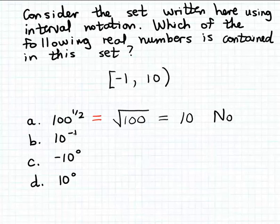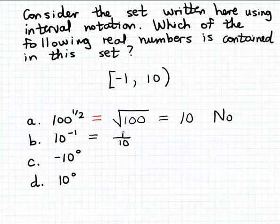Now let's check 10 to the minus 1 power. Remember, negative exponents do not mean multiply by minus 1. This means 1 over 10 to the first power, or one-tenth. Notice that one-tenth is a number between minus 1 and 10 — it's slightly bigger than 0. So 10 to the minus 1 power is definitely contained in this interval set.